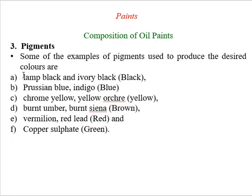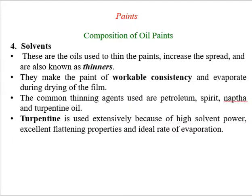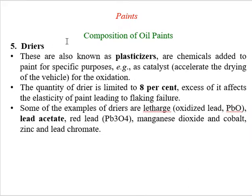Some commonly used pigments are lamp black, chrome yellow, and copper sulphate — depending on what type of color we want. The next composition is the solvent, also known as thinner. We use the solvent to make the paint consistency more workable; for example, if we have a thick paint we can add thinner to adjust its consistency.